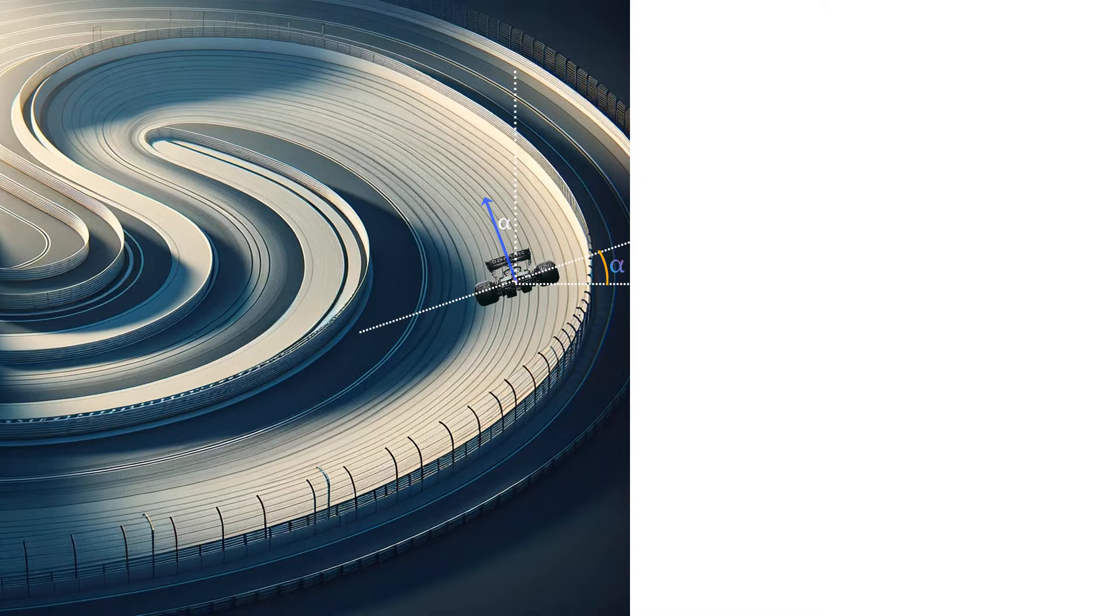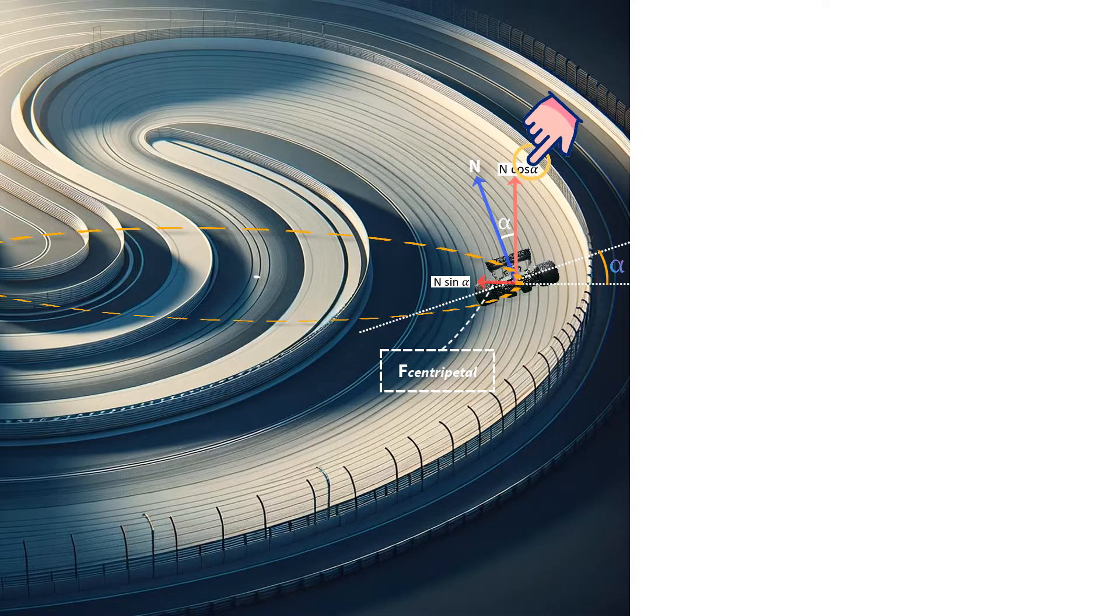...the normal force has two components, one horizontal like this, and one vertical like this. And here you can see that the horizontal component is pointing towards the center, quite the way a frictional force would. And therefore this provides the necessary centripetal force for the car to maintain circular motion. And we can also see that the vertical component is balancing the car's weight. So we can say N cos α is equal to Mg.